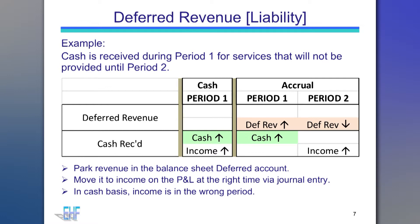Now we are on to deferred revenue, which is a liability account on your balance sheet. Funds may be paid to your organization during period 1 for services that will be delivered during period 2 — for example, the purchase of next season's concert series tickets or payments for tuition for future classes. These payments should not be recorded as income until they are actually earned. In some cases, the organization may be liable to return funds if the activity is canceled. In this example, advanced payments are parked in the deferred revenue liability account. The liability is converted to income at the appropriate time via a journal entry. The liability is reduced and income is increased. Cash is not affected.